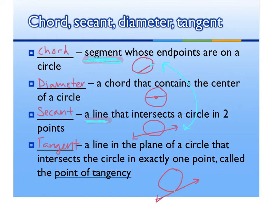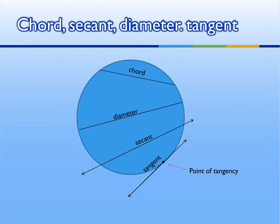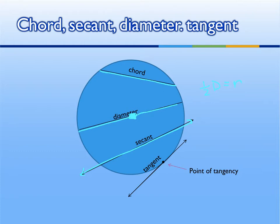Here we have a circle. Our tangent intersects at one point, and this point would be our point of tangency — that point where the circle and the line intersect. On this slide we have an example of each of these. A chord is a segment whose endpoints are on the circle. Our diameter goes through the center of the circle, and half of the diameter is our radius. Our secant goes through two points on the circle, but it's a line — we see it has arrows which tells us it's a line. And our tangent touches our circle at exactly one point, which is our point of tangency.